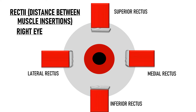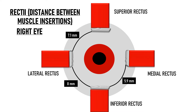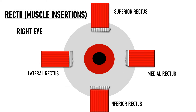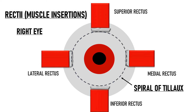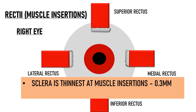The distance between rectus insertions ranges from 5.9 mm between medial and inferior rectus to 8 mm between inferior and lateral rectus. Between lateral rectus and superior rectus it is 7.1 mm, and between superior rectus and medial rectus it is 7.5 mm. Connecting these insertions gives us the spiral of Tilaux. It is also important to note that the sclera is thinnest at the site of rectus muscle insertions — only 0.3 mm — making this a common site of scleral rupture in ocular trauma.